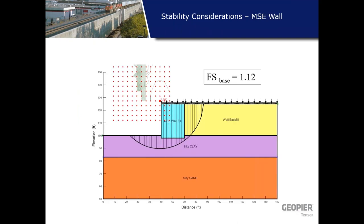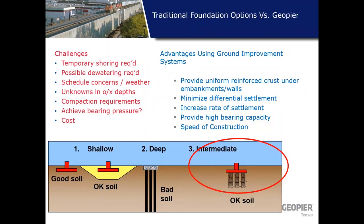What you see on the screen is a typical MSE wall picture — you see the MSE block, the retention zone, and the wall backfill. If an MSE wall is constructed over soft foundation soil, the slope or global stability analysis may indicate the system is unstable, with factor of safety values much lower than the required factor of safety. When the foundation soils are compressible or there is undocumented fill, the design criteria may not be met.